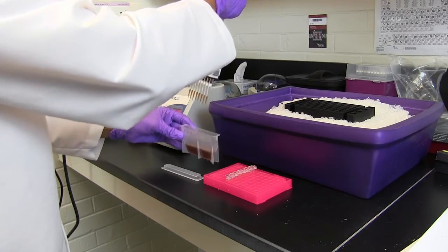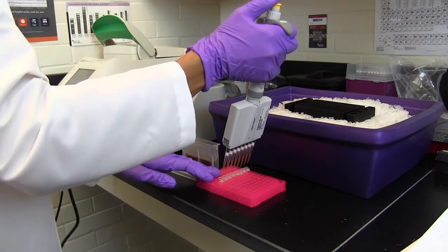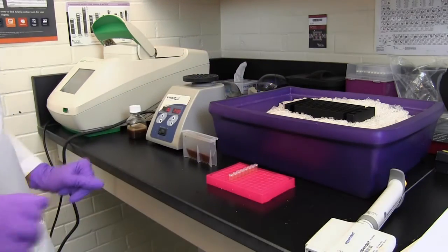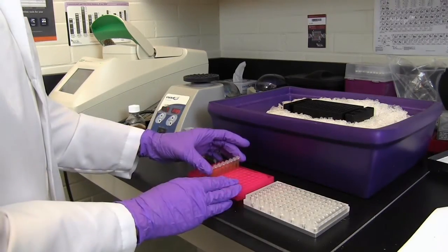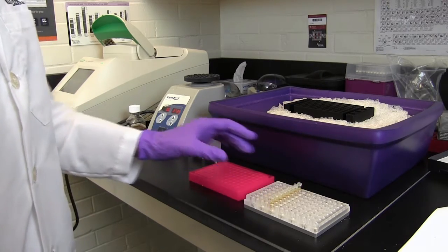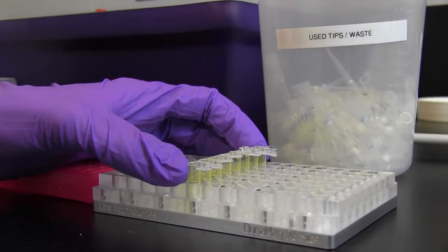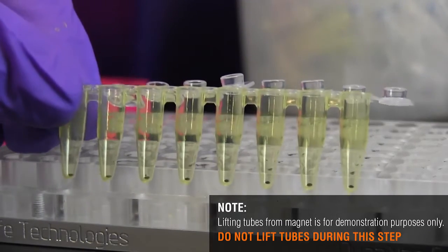For the second round of size selection, add new magnetic beads. Incubate for 5 minutes. Expose to a magnetic field and remove the supernatant. Discard the supernatant as the desired DNA is bound to the beads in the pellet.